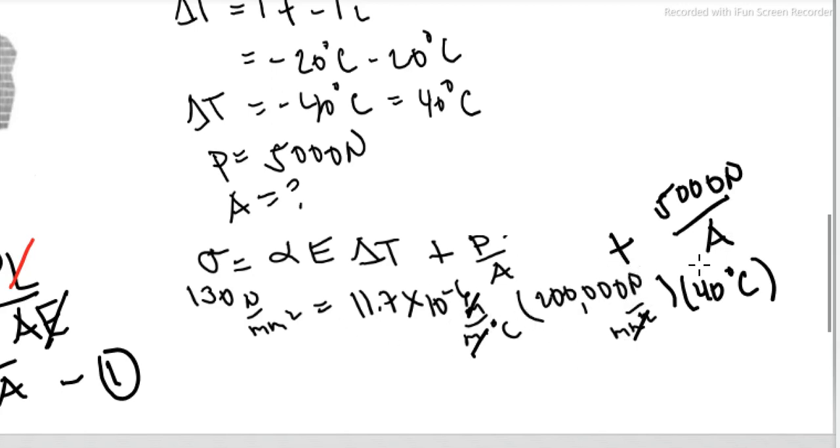Newton, mm, degree Celsius cancel. So area is equal to 137.36 mm squared.